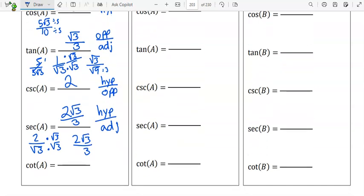Cotangent is the reciprocal of tangent. Adjacent over opposite. That's just the square root of 3.